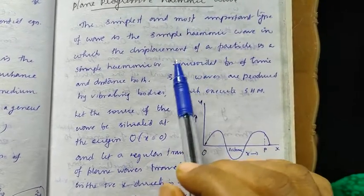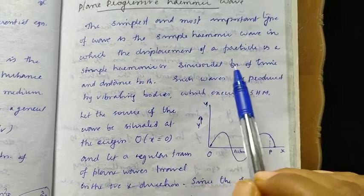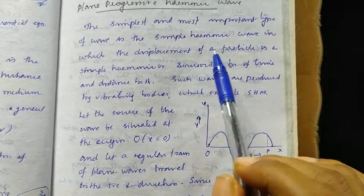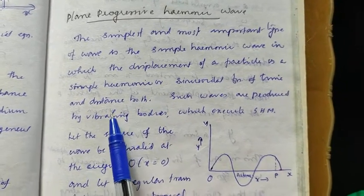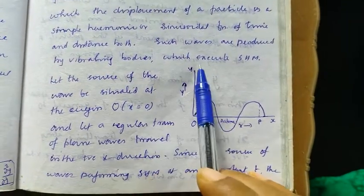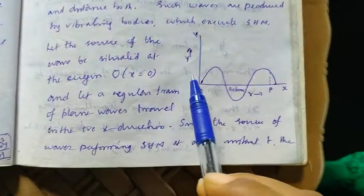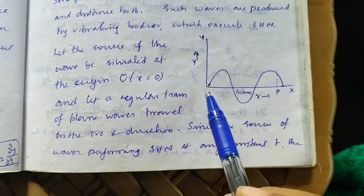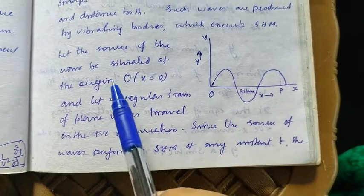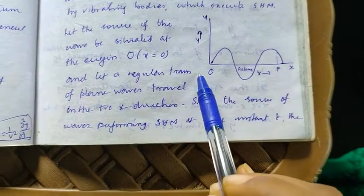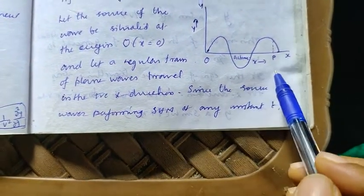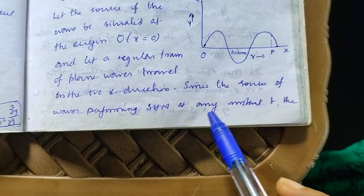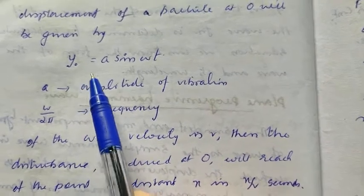We will discuss the motion and the displacement of the wave. It will be visible that the particle executes simple harmonic motion to maintain the wave motion. Imagine a wave propagated in the positive x direction, with the source situated at the origin O where x equals 0. A regular train of plane waves travels in the positive x direction. At any instant t, the displacement of a particle at the origin is given by y₀ = a sin(ωt).